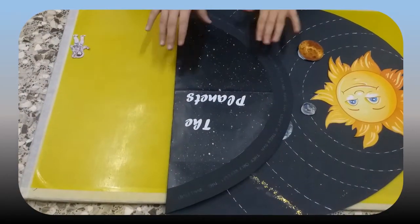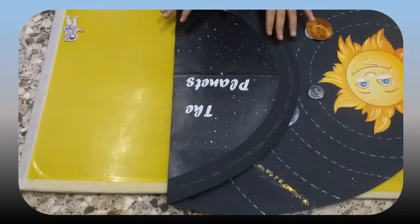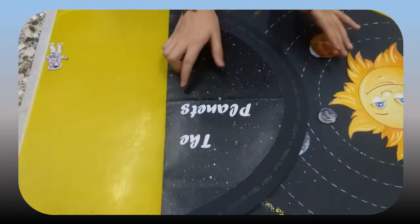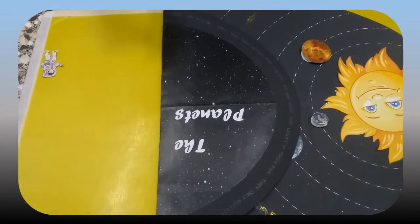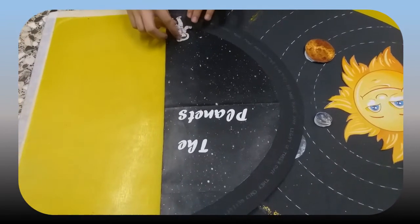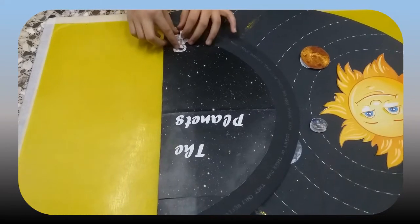Now I have made the front part and decorated it with some pictures like this. This is the planets, and here I have written something about planets. And now we will stick this picture of astronaut over here like this.